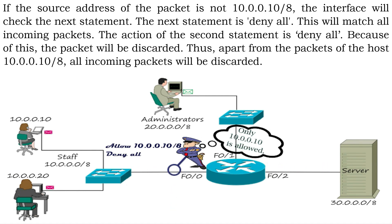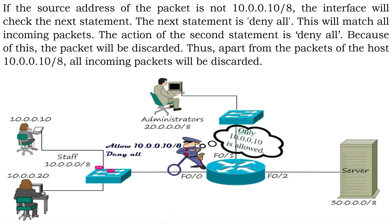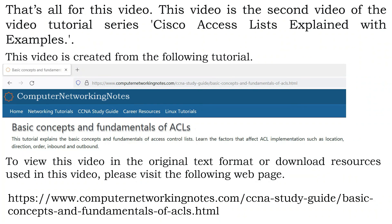If the source address of the packet is not 10.0.0.10, the interface checks the next statement — deny all — which matches all incoming packets, so the packet is discarded. Thus, apart from the packets of host 10.0.0.10, all incoming packets will be discarded. That's all for this video. In this video we discussed how location, direction, and order affect an ACL. In the next video we will discuss how ACL works. Thanks for watching.